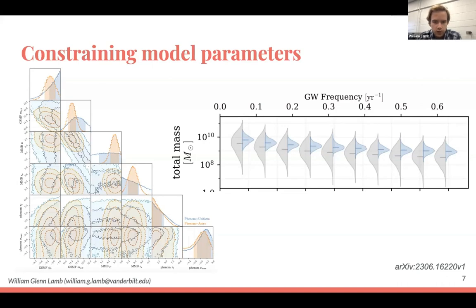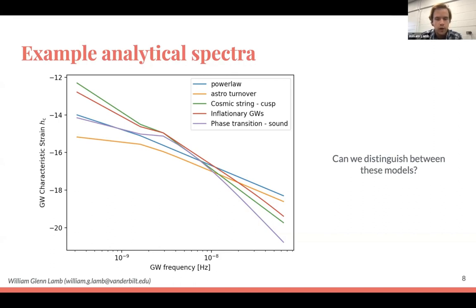That assumed an astrophysical source, but what if we want to compare to cosmological sources? Can we distinguish using spectral characterization whether the background is astrophysical or cosmological? By eye this doesn't look particularly obvious, because many spectra from different sources look very similar. In blue is a typical power law from a simple SMBHB model; in orange an analytical approximation of interacting binaries; and three cosmological models — cosmic strings, inflationary gravitational waves, and phase transitions — all look very similar.